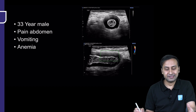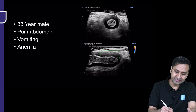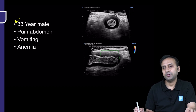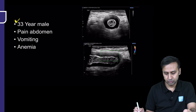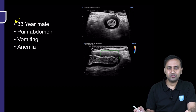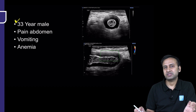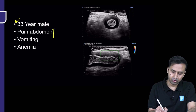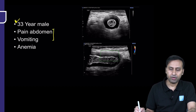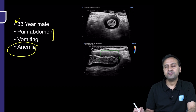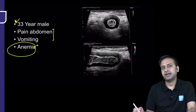Let's talk about our first case — a 33-year-old male. The patient came with vague abdominal pain. Examination findings were not very conclusive; the patient was not having any guarding or rigidity. The only complaints were abdominal pain and occasional vomiting. Lab investigations revealed anemia.